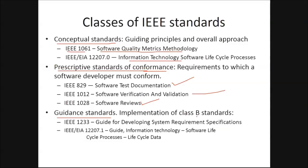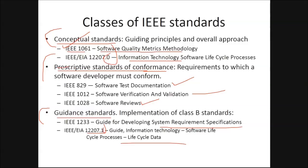Then we have guidance standards for implementation of class B standards. That is IEEE 1233, which is a guide for developing system requirement specifications (SRS). Then we have IEEE/EIA 12207.1, which is a guide for information technology software lifecycle processes — lifecycle data. So there are three major classes of IEEE standards: conceptual standards, prescriptive standards of conformance, and guidance standards.